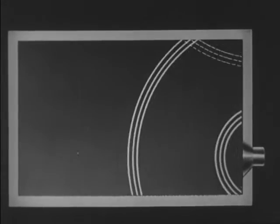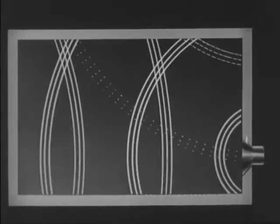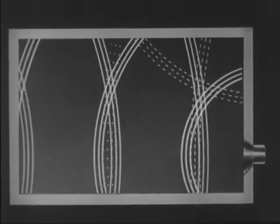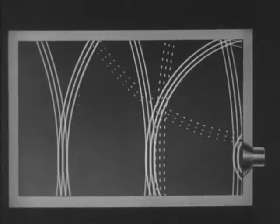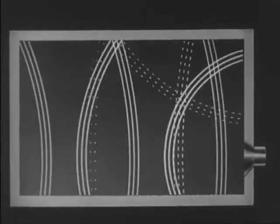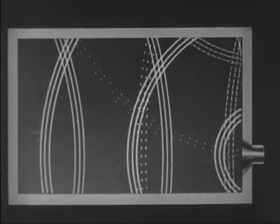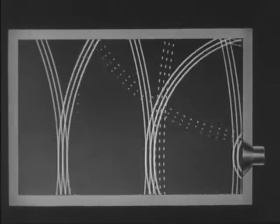Reflected sounds are called echoes. Echoes, particularly indoors, are not distinct because the successive reflected waves interfere with the original waves. Upon striking an obstacle such as a wall, part of the wave's energy changes into heat, part passes through the obstacle, and part is reflected. The dashed lines represent reflected waves that are nearly dissipated.